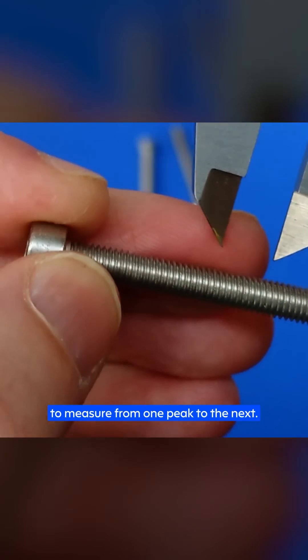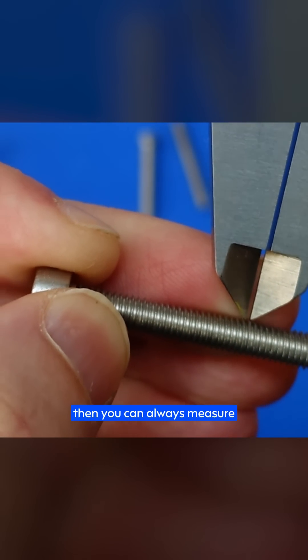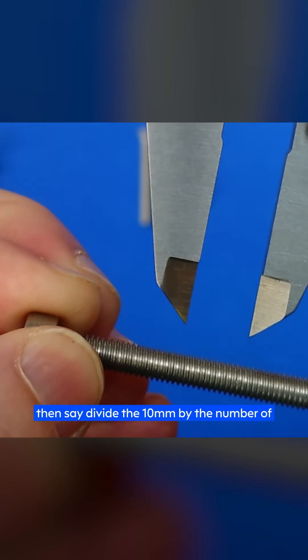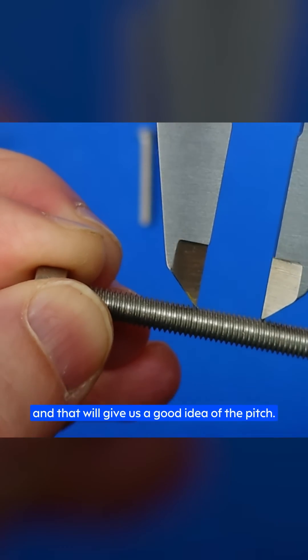So for pitch, we'll try to align our calipers to measure from one peak to the next. If the threads you're measuring are really fine, then you can always measure the amount of threads over say 10 millimeters and then divide the 10 millimeters by the number of thread peaks that you find within that section and that'll give you a good idea of the pitch.